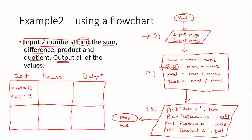We now go to box two, which is our process, rectangular shape. Sum equals num1 plus num2. So the sum is 10 plus 2, which is 12. The difference is 10 minus 2. And that's 8. The prod, which is the product, is num1 plus num2. So that's 10 plus 2 equals 12.